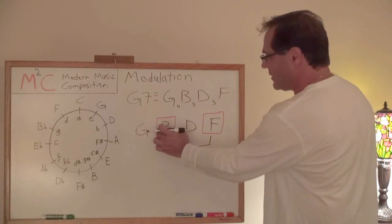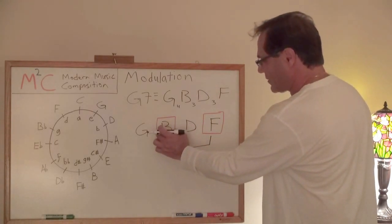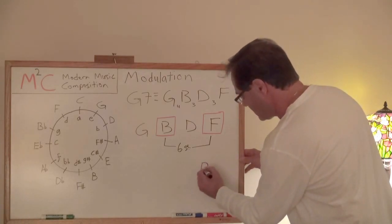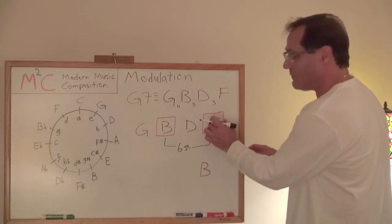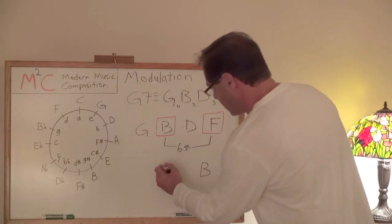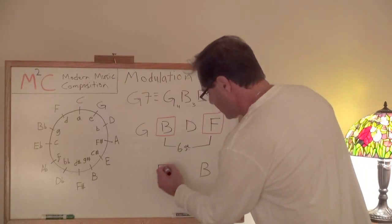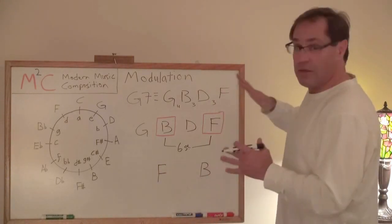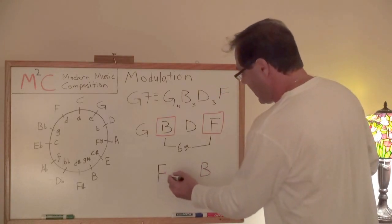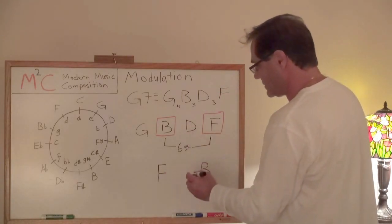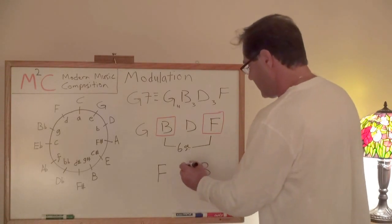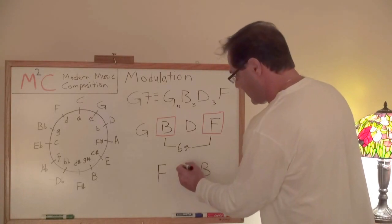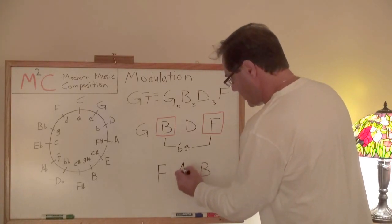What you do is you take the third of your seventh chord that you're in and you move it to the seventh of your new key. Then you take the seventh of the chord that we're in and we move it to the third. Then we just play a little Jeopardy here and we fill in the blanks. So I know from F I need to go up three semitones. Well, that's going to be F to G, that's going to be A flat.